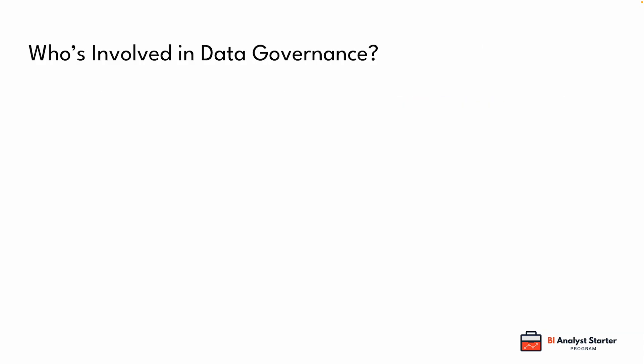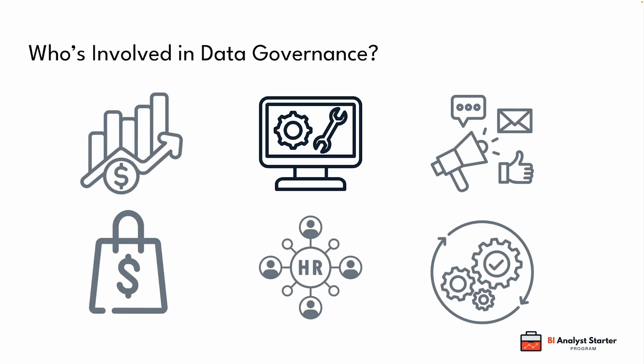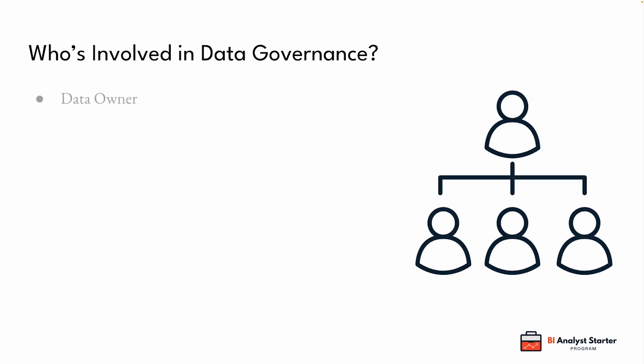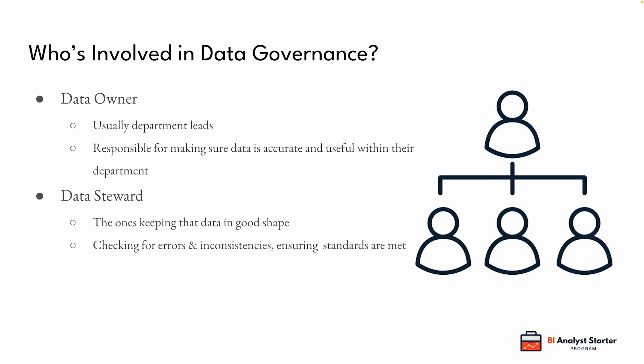One of the biggest misconceptions is that data governance is just an IT thing. In reality, it involves people across different parts of the business — not just IT, but also operations, compliance, and individual teams that use or manage data. You have data owners, usually department leads, who are responsible for making sure data is accurate and useful within their department. Data stewards are the ones keeping the data in good shape — checking for errors, cleaning up inconsistencies, and making sure standards are followed.